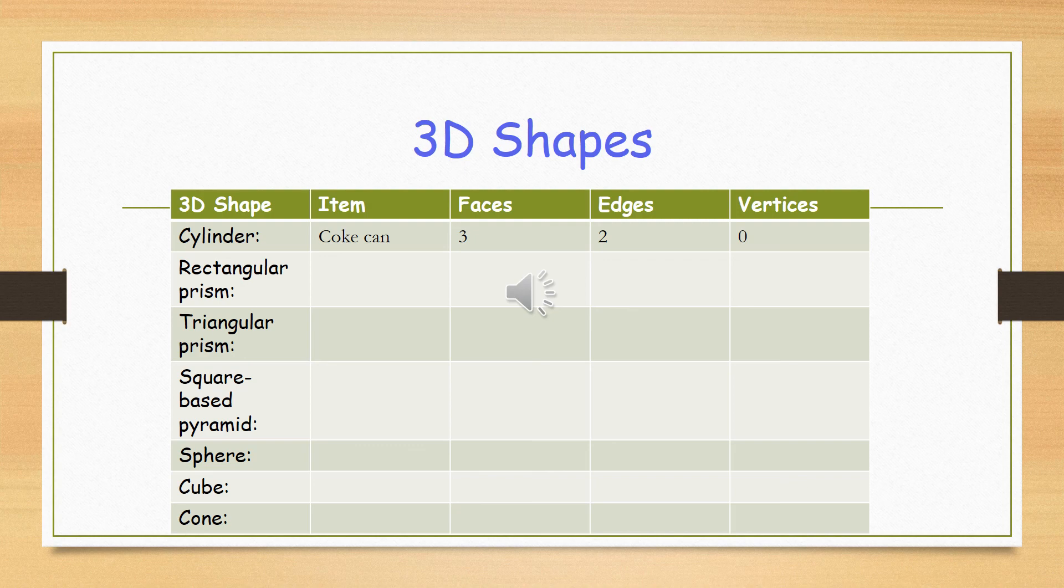For your activity, you are going to have a look around the house and see if you can find items in your house that are these 3D shapes. For example, a cylinder.